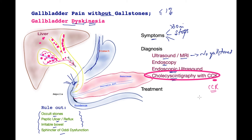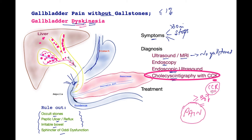Ordinarily you would expect the gallbladder to excrete more than 30% of its contents. If the ejection fraction is less than that value, it is quite likely the patient has gallbladder dyskinesia. In addition, if there is reproduction of the pain with administration of CCK or with a fatty meal, then it is very likely that the patient has this condition.